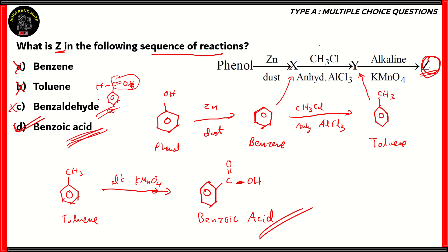So when phenol reacts with zinc dust, it forms benzene. Benzene, when it reacts with methyl chloride and anhydrous aluminum chloride, you get toluene. Toluene, when it's oxidized by alkaline KMnO4, you get benzoic acid. So option D, benzoic acid, is the correct option for Z in the following sequence.